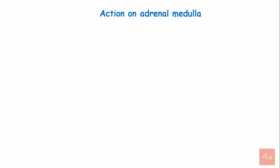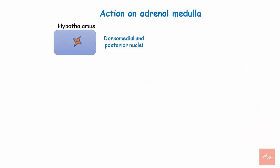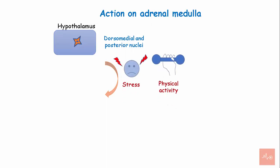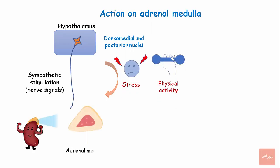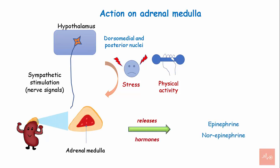Action on the adrenal medulla. The dorsal, medial, and posterior nuclei of the hypothalamus, in the presence of emotional stimuli like stress and exercise, cause sympathetic stimulation of the adrenal medulla through nerve fibers to release catecholamines like epinephrine and norepinephrine. These in turn deal with the emotional stimulus by raising the blood pressure, heart rate, and blood glucose levels.